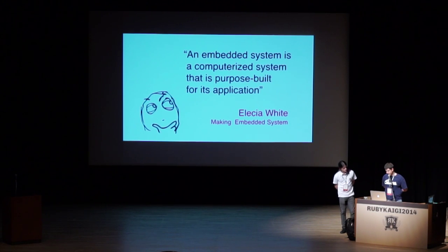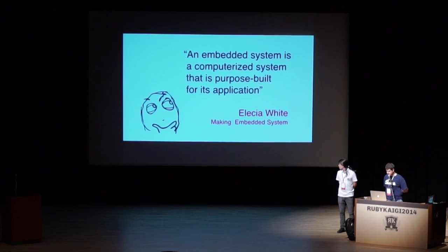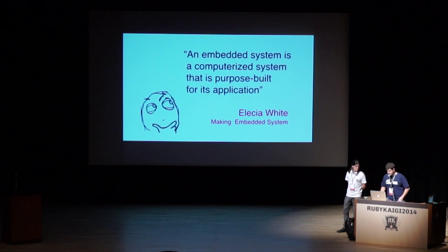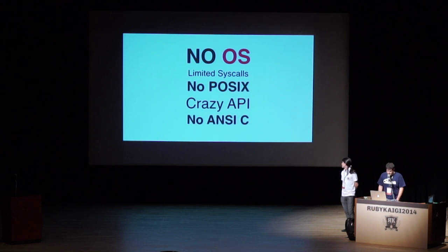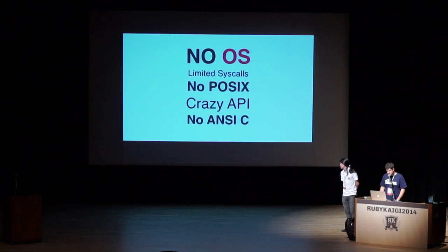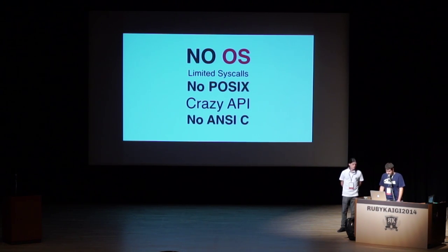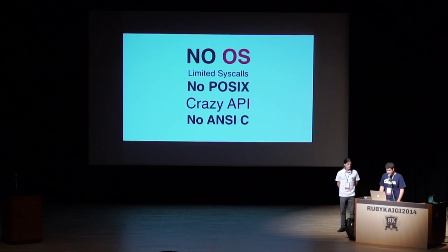I like this definition from "Making Embedded Systems" by Alicia White: an embedded system is a computer system purpose-built for its application. When I saw that, I thought — embedded systems are difficult. Most of the machines we work with have no OS, limited system calls, no POSIX system, and crazy or poorly documented APIs. That's really difficult.